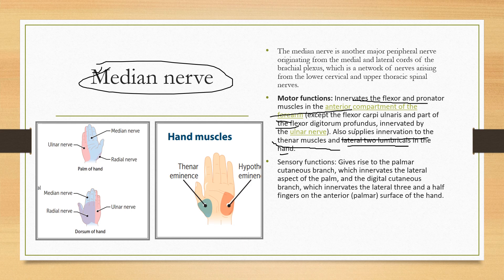The thenar muscles are the muscles on the thumb side, and the hypothenar muscles are the muscles on the pinky side — the small finger. The sensory function of the median nerve gives rise to the palmar cutaneous branch, which innervates the lateral aspect of the palm — the thumb, index finger, middle finger, and half of the ring finger.